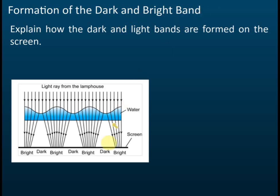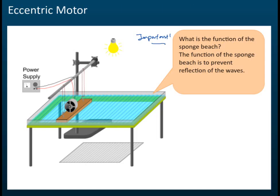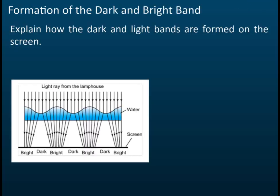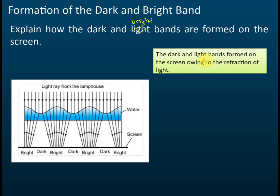This is also very important: the formation of dark and bright bands on the screen below the ripple tank. This is a common exam question — explain how the dark and bright bands are formed. There are three marks for this. First, you must state that the dark and bright bands form on the screen owing to the refraction of light. You will get one mark for stating this.